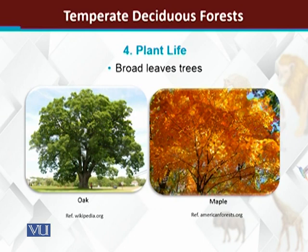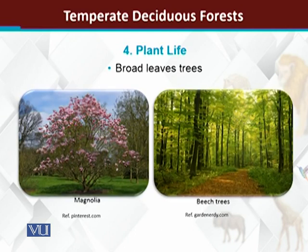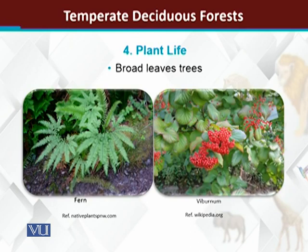In temperate deciduous forests, broadleaf plants dominate. Some examples include oak, maple, magnolia, and beech trees — these are all broadleaf trees that dominate the temperate deciduous forest. Some other shrubs and herbs are also present.